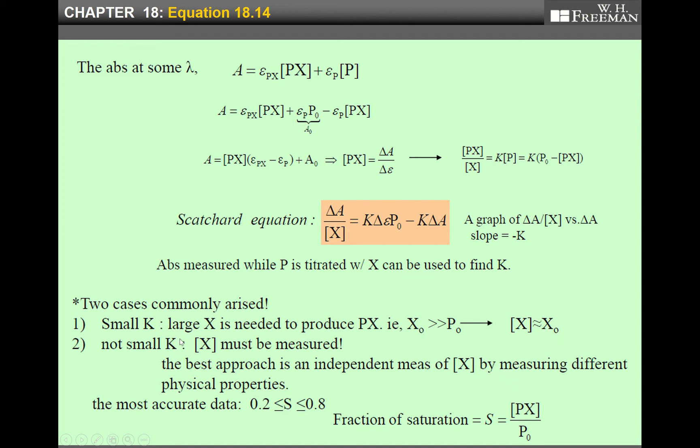But when K is not small, in this case the equilibrium constant K must be measured. The best approach is an independent measurement of X by measuring different physical properties. So for most accurate data, this S must be between 0.2 and 0.8. Here, S is fraction of saturation given by [PX] over P₀. So in actuality, there are many cases where equilibrium constant is very small, so this approach is possible.